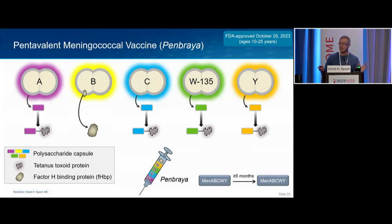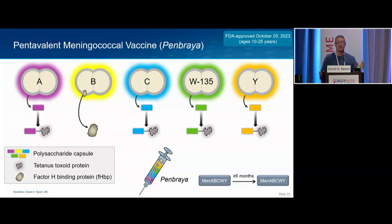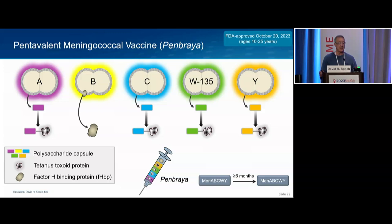The newest vaccine is pentavalent — Penbraya. They get around the meningococcal B problem by using a surface protein instead of the polysaccharide. But it has not been studied in HIV, is not recommended, and is not in any guidelines. Do not replace the standard quadrivalent with this new pentavalent for routine revaccination. For repeat immunizations every five years, this is not your currently recommended vaccine.